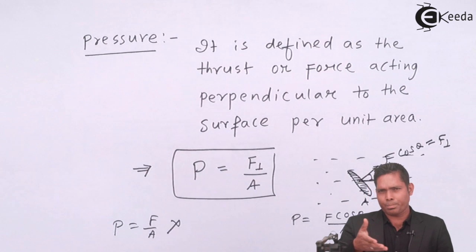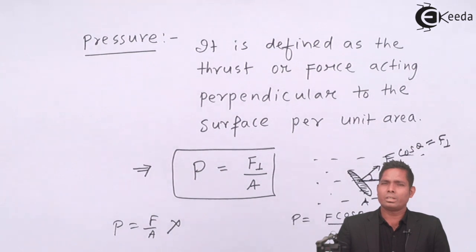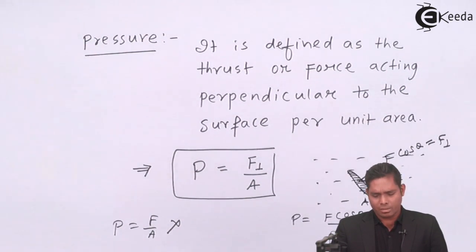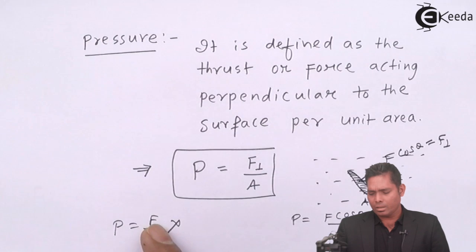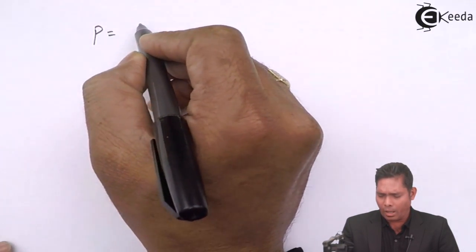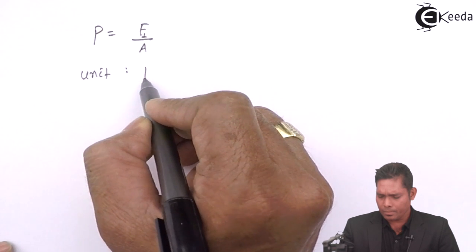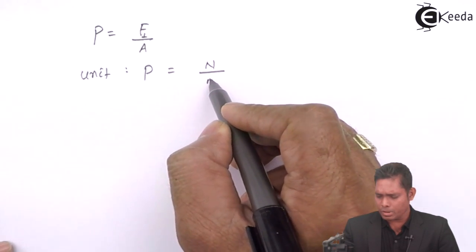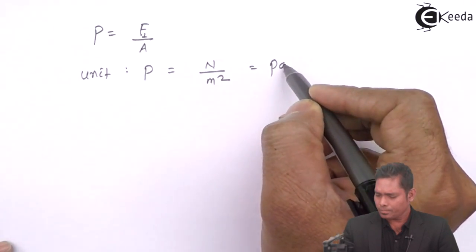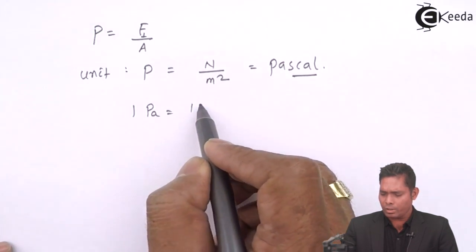Pressure is a scalar quantity because the force is predetermined to always act perpendicular to the surface — its direction is fixed and does not change. Therefore pressure is scalar. The unit of pressure in SI is Newton per meter square, which is also known as Pascal. One Pascal equals one Newton per meter square.